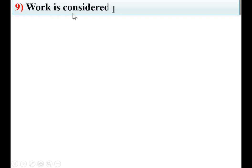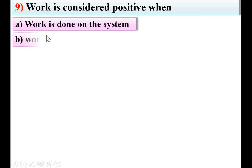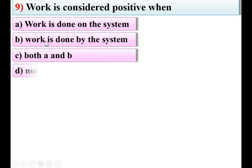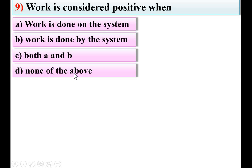Next: work is considered positive when — options: work is done on the system, work is done by the system, both A and B, none of the above. If work is done by the system it is considered positive; if work is supplied to the system it is negative. So B is the right answer.